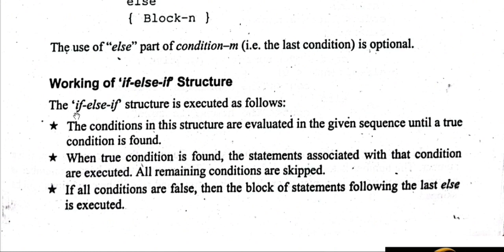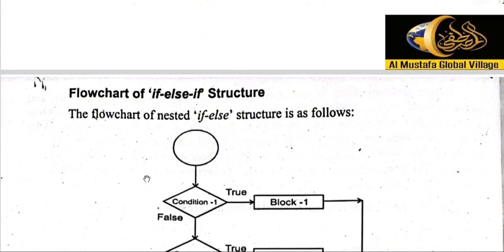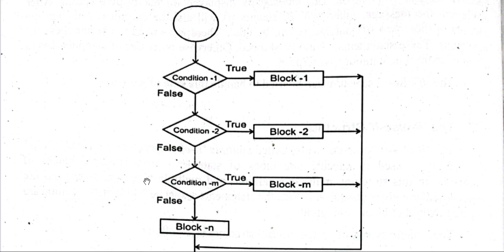Working of if-else-if structure: The conditions in the structure are evaluated in order until a true condition is found. جب تک condition true نہیں ہوتی وہ next condition پر move کرتا رہتا ہے۔ When the true condition is found, the statements associated with that condition are executed. All remaining conditions are skipped — یعنی پہلی condition true ہوتے ہی وہ کسی اور condition کو چیک کرنے نہیں جاتا۔